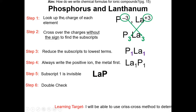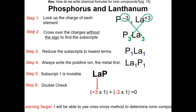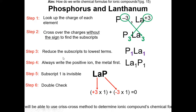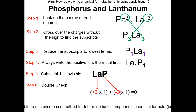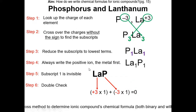Now we double check our work by double checking the charges. La has a charge of positive 3, while P has a charge of minus 3. We have 1 each, so positive 3 plus negative 3 gives us 0. So this is a neutral ionic compound.